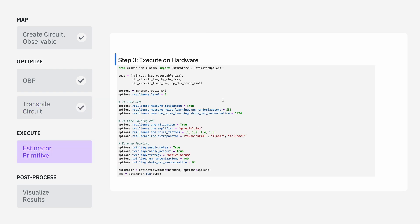Next, we're going to execute these circuits on a quantum processor using the Qiskit primitive estimator. We're going to set some error mitigation options to get improved results. First, we're going to turn on readout error mitigation, which runs a couple of jobs before our actual circuits to characterize bit-flip probabilities in our measurements and correct our outcomes. We're also going to do zero noise extrapolation — rather than running one circuit, we run a couple and amplify the error for subsequent ones, letting us extrapolate backwards towards zero error. And finally, we're going to turn on twirling, which randomly inserts single-qubit gates with every shot to shape the noise into a form that is easier to error mitigate.